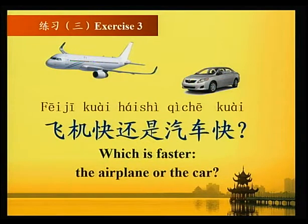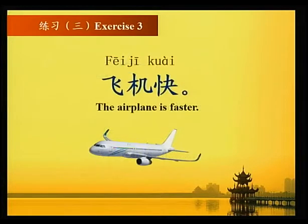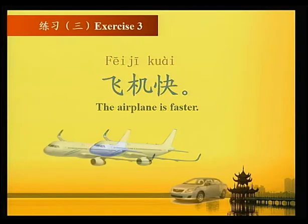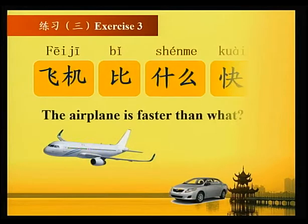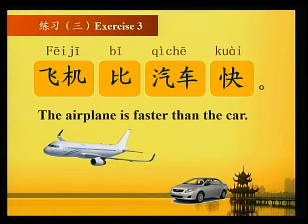练习三 Exercise three: 飞机快还是汽车快？Which is faster, the airplane or the car? 飞机快 — the airplane is faster. 飞机比汽车快 — the airplane is faster than the car.